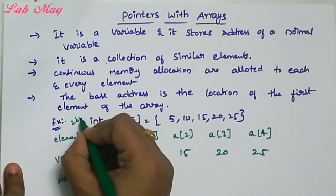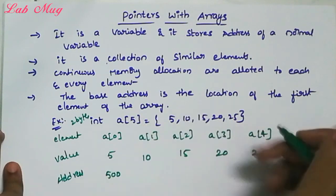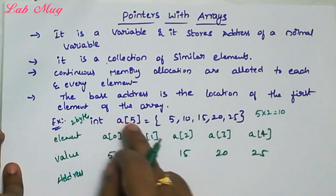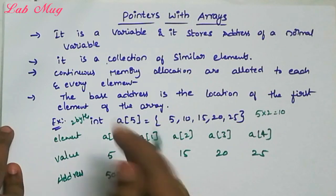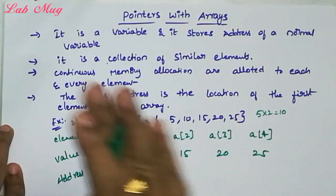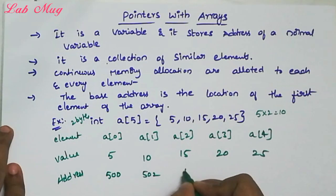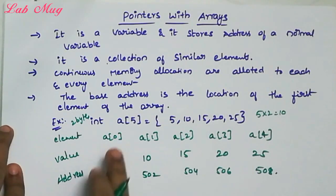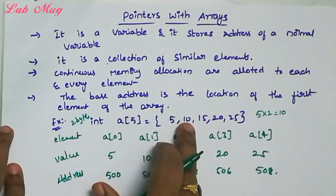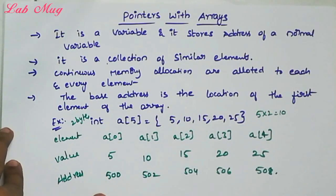Integer data type occupies 2 bytes. So 5 elements means 5 × 2 = 10 bytes of memory allocated for the array. Starting from address 500, with continuous allocation: 500, 502, 504, 506, and 508. Each element occupies 2 bytes, so 5 elements occupy 10 bytes of memory total.